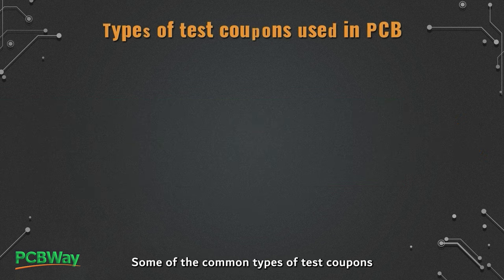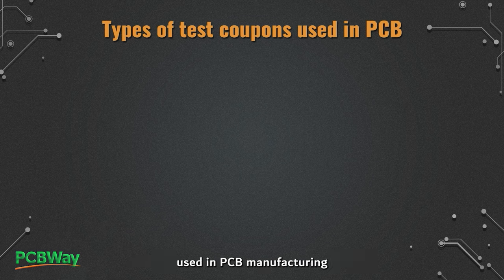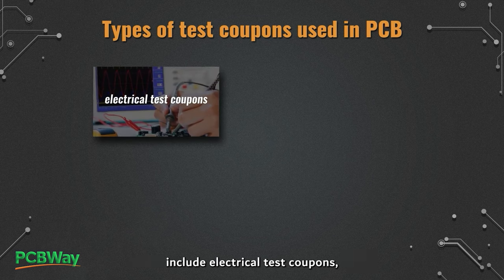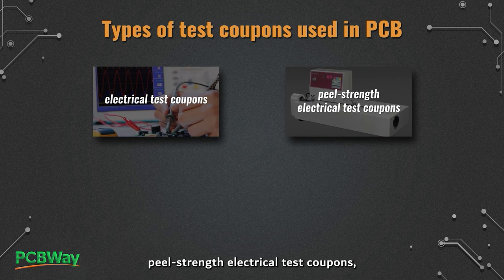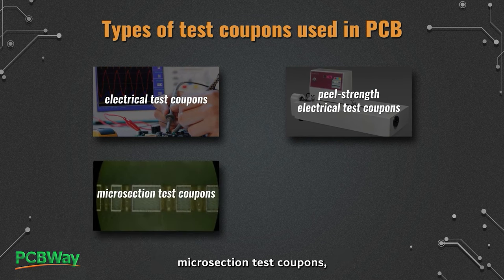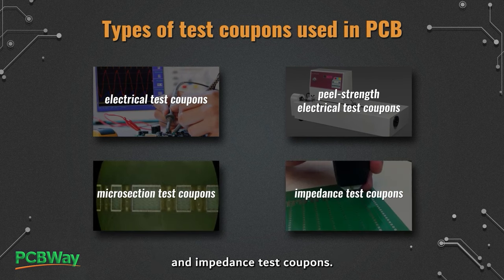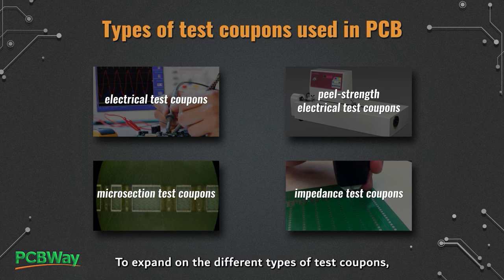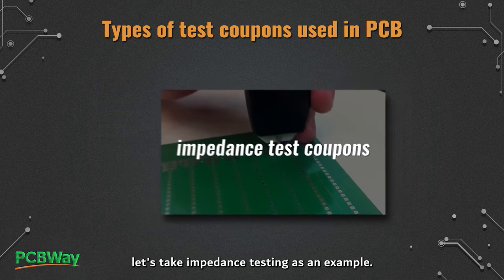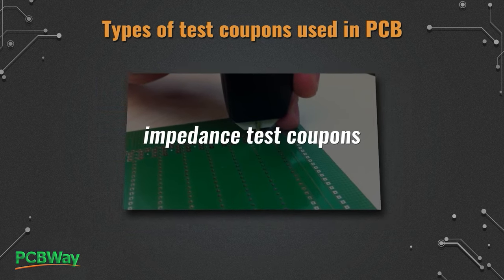Some of the common types of test coupons used in PCB manufacturing include electrical test coupons, peel-strength electrical test coupons, microsection test coupons, and impedance test coupons. To expand on the different types of test coupons, let's take impedance testing as an example.